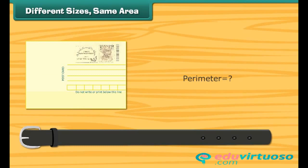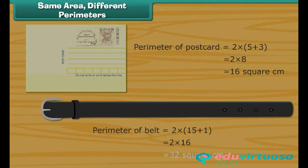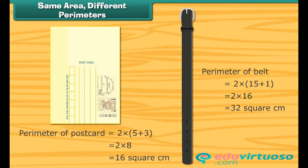Let us find out. Perimeter of postcard is equal to 16 cm, while the perimeter of belt is 32 cm. Thus, the things with same area can take different forms. The perimeter of such things can be same or different.